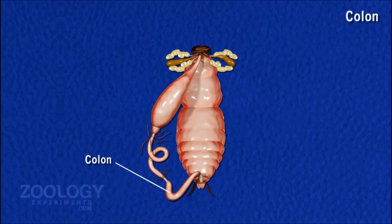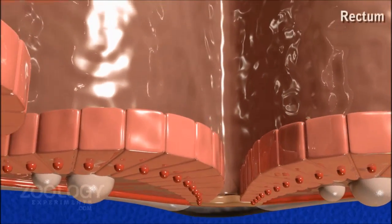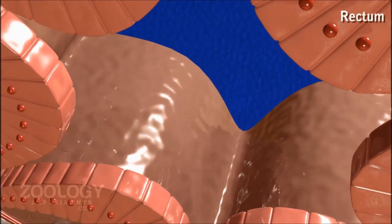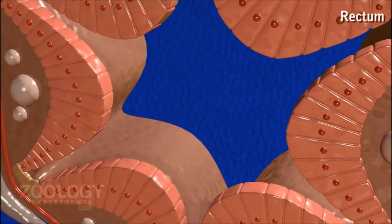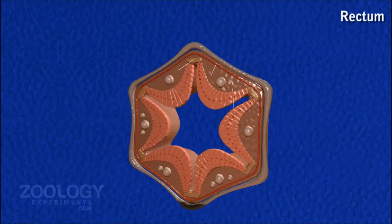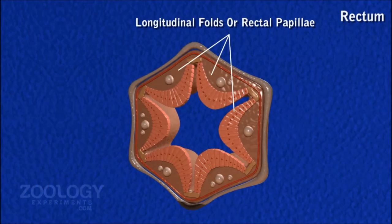Colon. The colon is long, wide, thin, and irregular in shape. Rectum. The rectum is an oval or spindle-shaped sac with external ridges alternating with internal longitudinal thickenings called rectal pads. These are six in number and also known as rectal glands. The rectum opens to the outside by the anus.